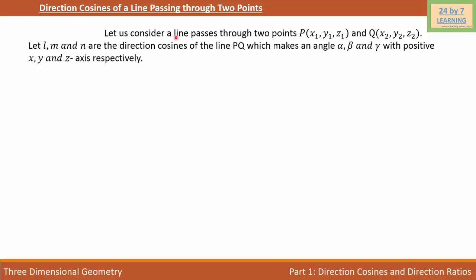Let us consider a line passes through two points P and Q. Let L, M and N are the direction cosines of the line PQ which makes an angle alpha, beta and gamma with the positive X, Y and Z axis respectively.